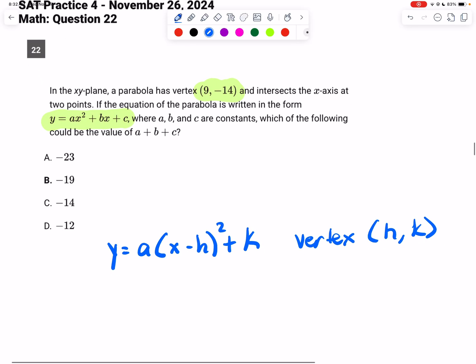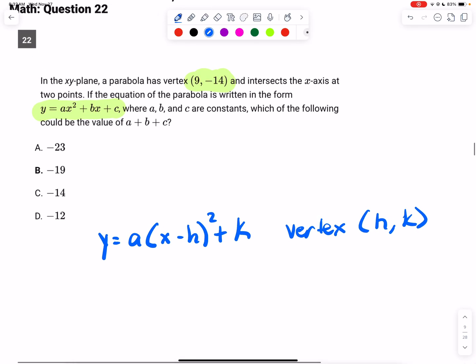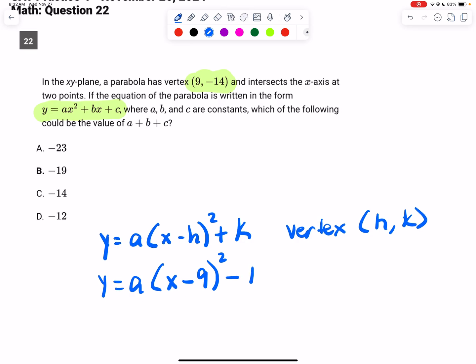Alright, so once you know that, we can start plugging in. So we don't know what a is, so I'm going to put a and then x minus 9 squared, or rather than plus, minus 14.